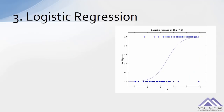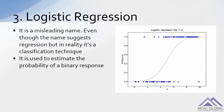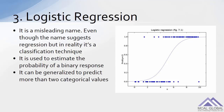Number three: logistic regression. It is a misleading name — even though the name suggests regression, in reality it is a classification technique. It is used to estimate the probability of a binary response. It can be generalized to predict more than two categorical values as well.